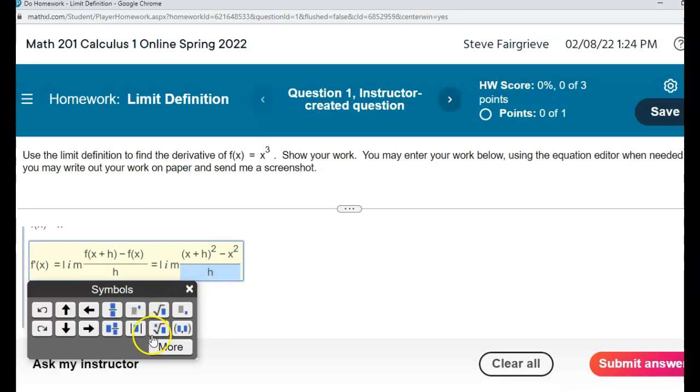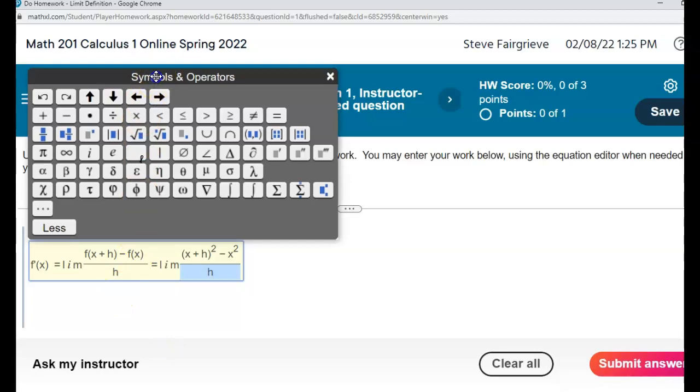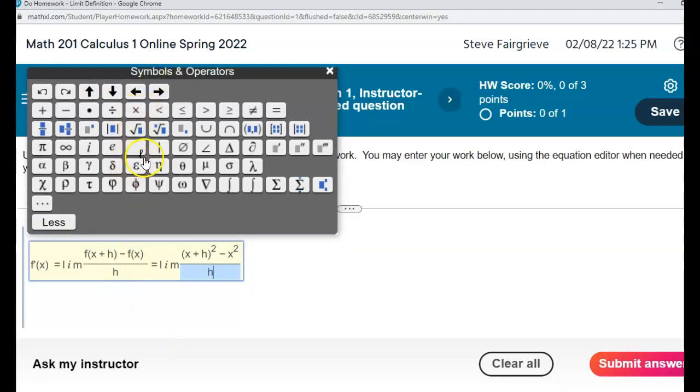If you need something with a square root, if you need more options you click more and it pops up all the symbols. Many of which we really won't be needing. The most common ones for us are going to be the fraction bar, square root, maybe a cube root or a fourth root or something like that. Those would be the ones you'd mostly be using.